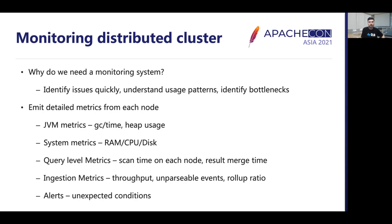We started with emitting detailed metrics from each node. Metrics were broadly categorized as JVM-level metrics such as time spent in GC activity and heap usage; system-level metrics such as RAM consumption, disk usage, and CPU; query-level metrics, where each query processed on every node emitted metrics such as data scan time and time taken to merge partition results; ingestion-related metrics including ingestion throughput and number of unparsable events; and data summarization metrics showing how much rollup we achieved on a given dataset. Any unexpected conditions on any node would trigger an alert to notify our operations team.